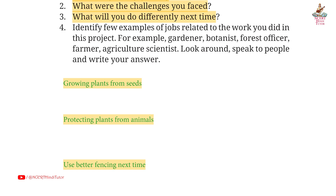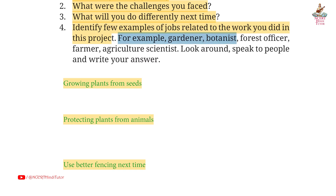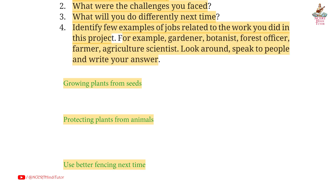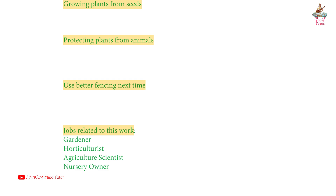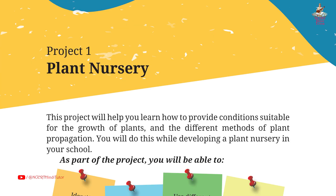Question 4: identify a few examples of jobs related to the work done in this project — e.g., gardener, botanist, forest officer, farmer, agriculture scientist. Answer — jobs related to this work: gardener, horticulturist, agriculture scientist, nursery owner.